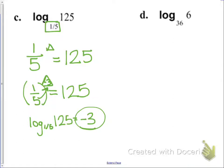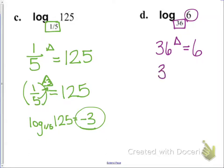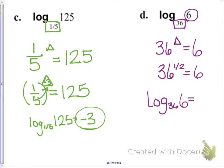For the last one — log base 36 of 6 — 36 to what power would equal 6? Because of rational exponents, 6 squared gives us 36, so we take the inverse of squaring, which is raising to the 1/2 power — the same as the square root of 36. So 36 to the 1/2 power equals 6, and therefore log base 36 of 6 is equal to 1/2.